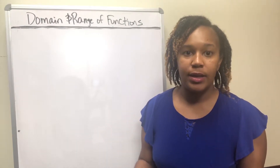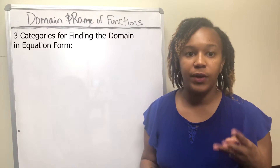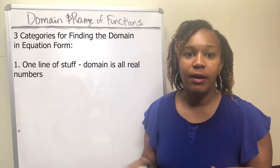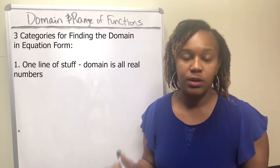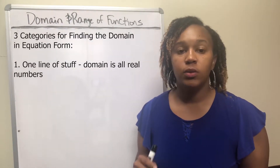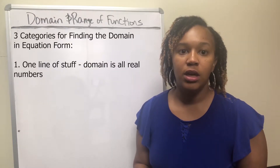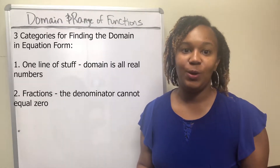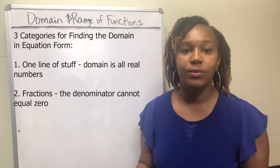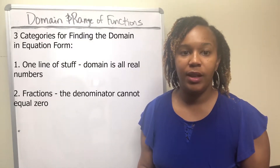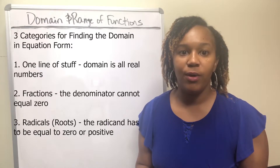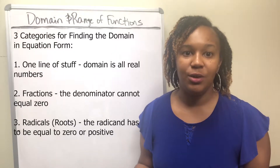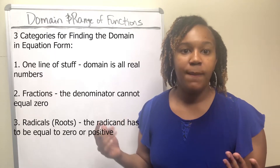Whenever you want to find the domain and the function is in equation format, there are three different categories to consider. The first category is what I call 'one line of stuff' — just one line of variables, exponents, and symbols — and your domain is always going to be all real numbers. The second category is fractions, where the denominator cannot be zero, so you have to consider that restriction. The third category is radicals — whenever you have radicals, what's underneath the root cannot be negative, because a negative under a square root gives you an imaginary number, which is not a real number and doesn't give you a point on the graph.